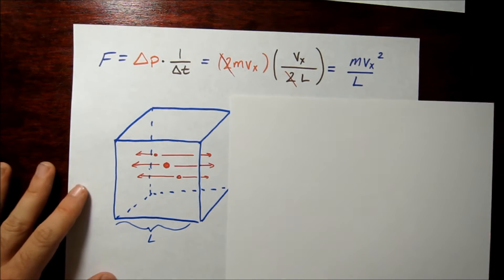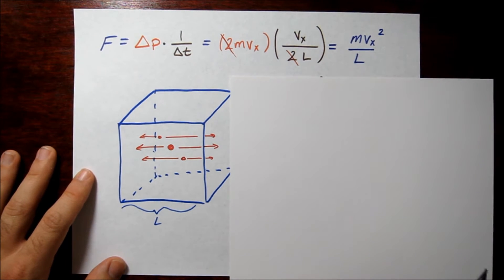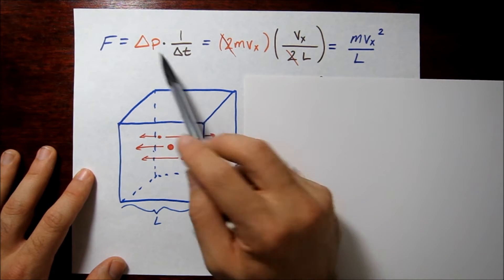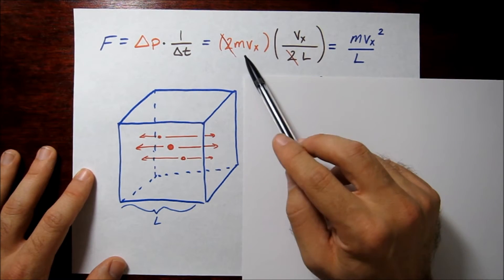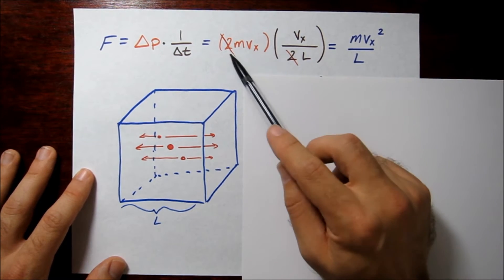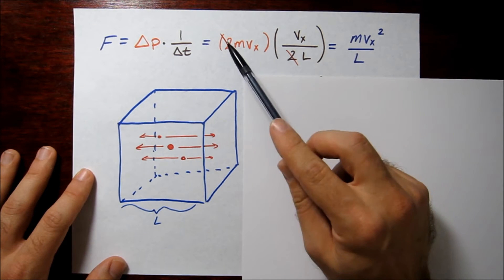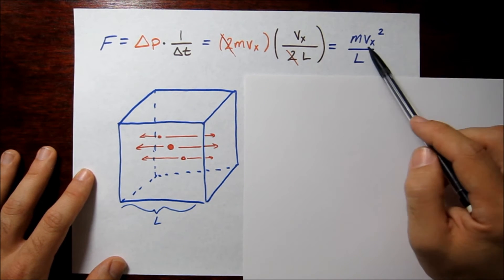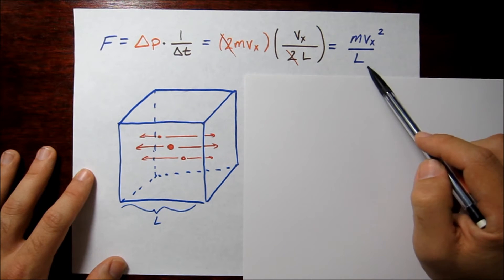Now we plug those two quantities back into the force equation. Change in momentum over change in time gives us 2mv_x times v_x over 2L. The 2's cancel, and this simplifies to mv_x squared over L.